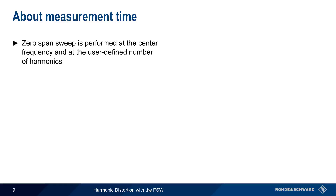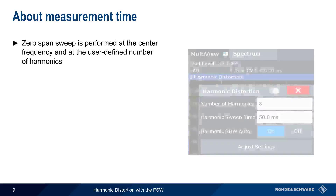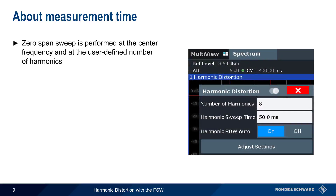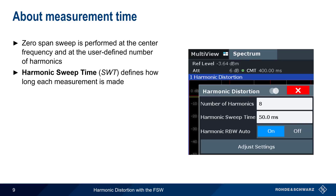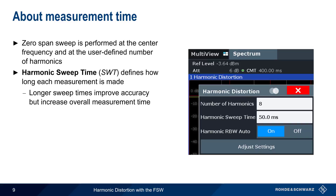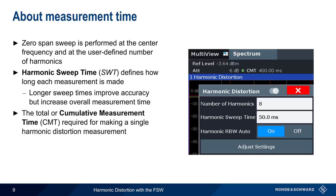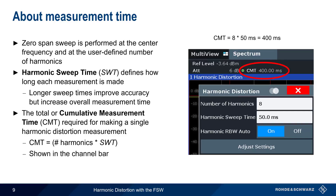The FSW uses zero-span mode to measure the fundamental and each of n user-defined harmonics. In this example, measurements are made up to the eighth harmonic. The harmonic sweep time parameter defines how long each zero-span measurement is made. Longer sweep times improve accuracy but will also increase overall measurement time. The FSW therefore displays the cumulative measurement time — that is, the time required to measure at the fundamental and at the defined number of harmonics. This is simply the number of harmonics times the measurement time, displayed in the FSW's channel bar. For example, 400 ms for eight harmonics with a measurement time of 50 ms each.